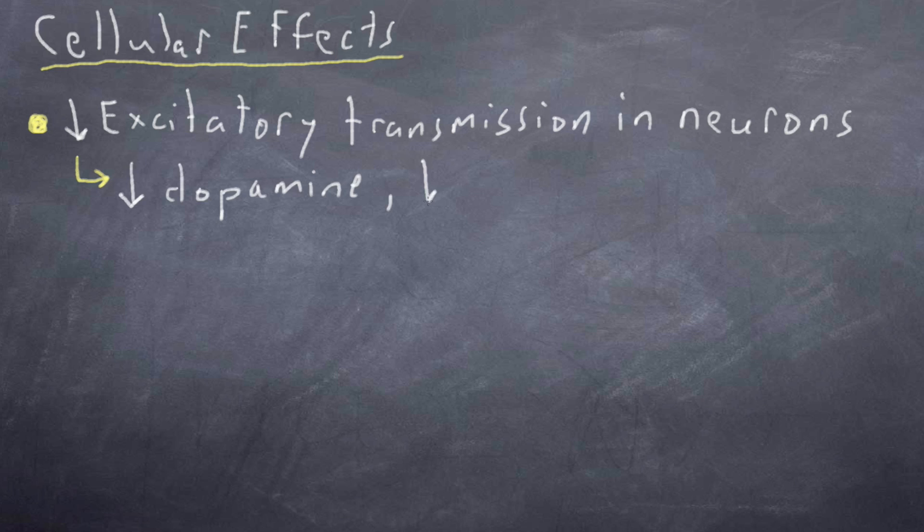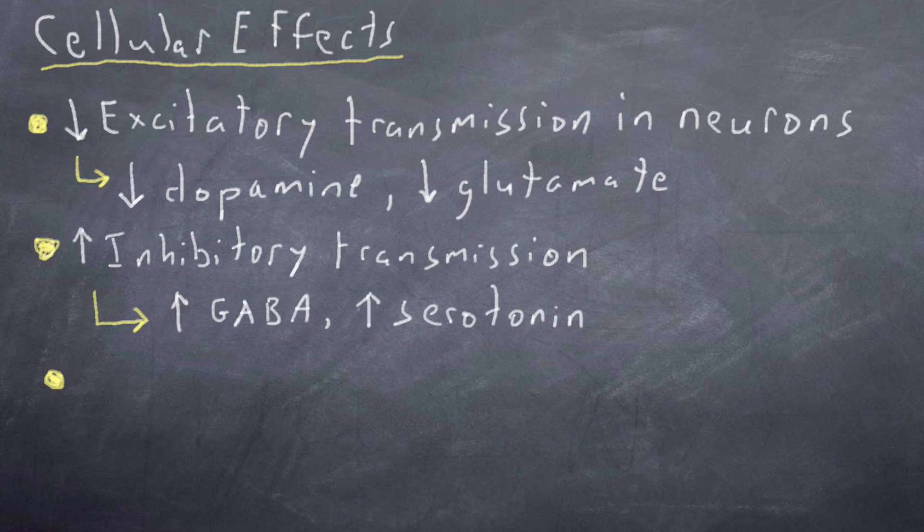At the cellular level, it decreases excitatory neurotransmission by lowering levels of dopamine and glutamate. It increases inhibitory transmission by increasing GABA and serotonin levels.